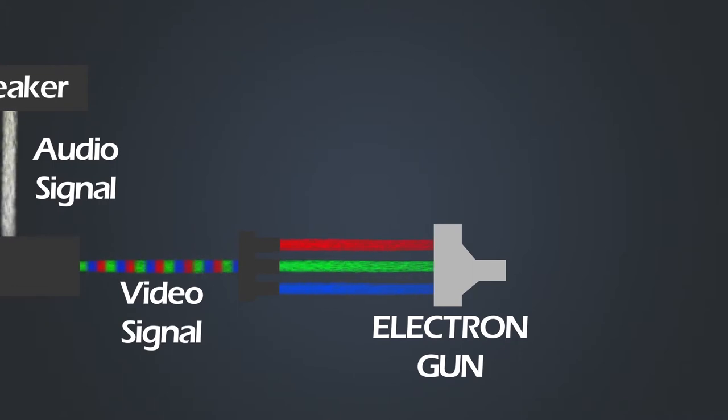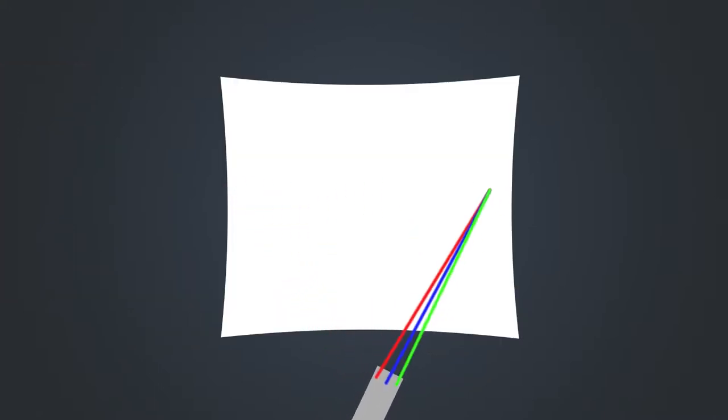An electron gun for the red, an electron gun for the green and the blue. This then gets fired at your television screen which is covered in phosphors and depending on how much green or blue you want it'll react differently to different amounts. And then your image will get read on line by line.